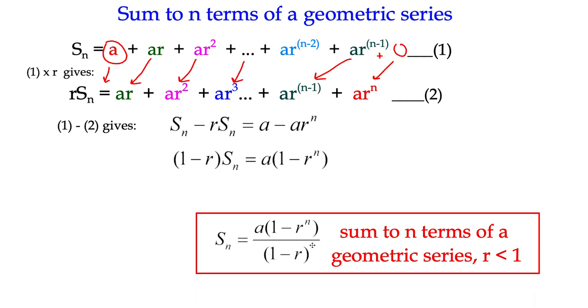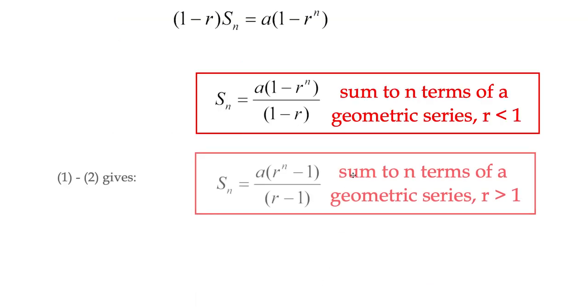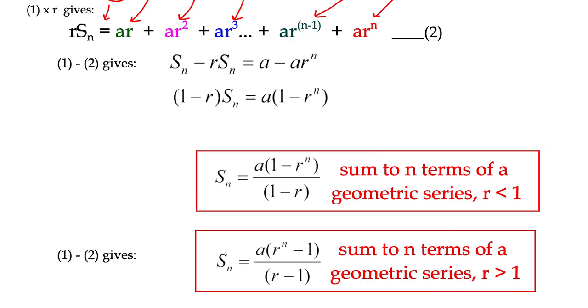When r is greater than 1, we could still use this formula, but we could consider what happens if we actually had subtracted 1 from 2 at the beginning. Effectively, the terms are reversed. You can prove it if you want. I'm not going to at the moment. But you end up with a second formula, which looks very similar: a times r to the n minus 1 over r minus 1. Notice that the r and the 1 terms swap places.